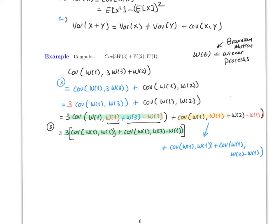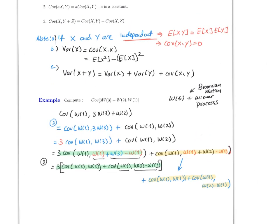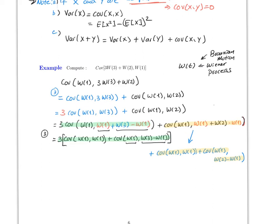This is very important: Brownian motion has independent increments, which means W1 is independent of (W3 − W1), and W1 is independent of (W2 − W1). By property A, the covariance of two independent variables equals zero. So both cross terms equal zero.